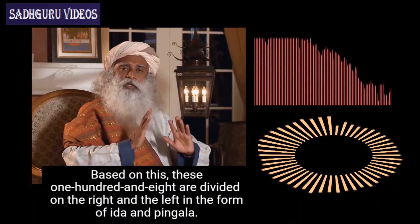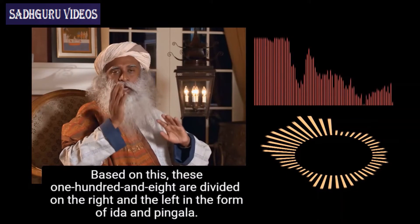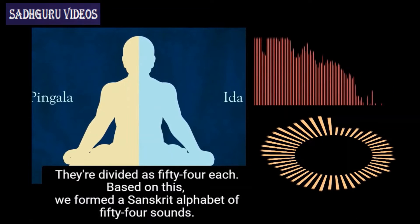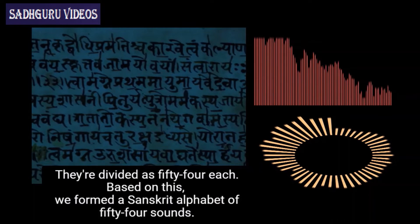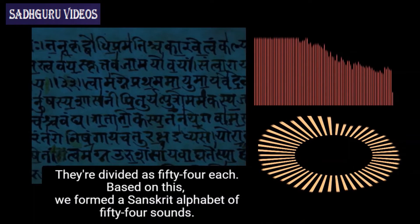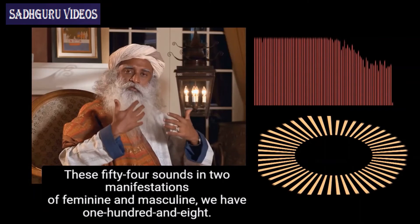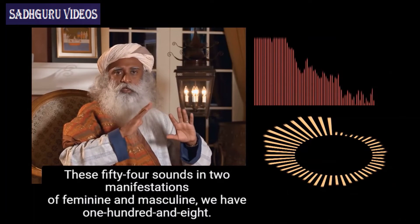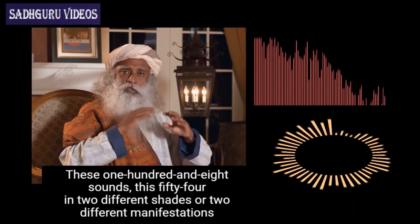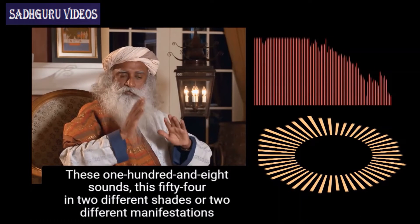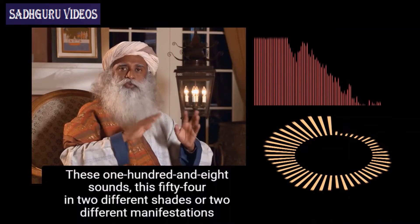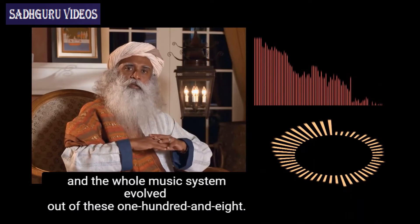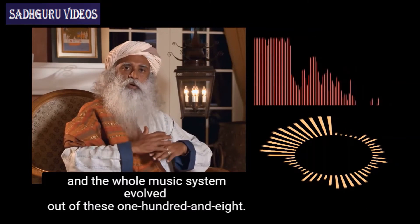Based on this, these 108 are divided on the right and the left in the form of Ida and Pingala. They're divided as 54 each. Based on this, we formed a Sanskrit alphabet of 54 sounds. These 54 sounds in two manifestations are feminine and masculine, making 108. These 54 in two different shades or manifestations, amounting to 108, has a significance and the whole music system evolved out of these 108.